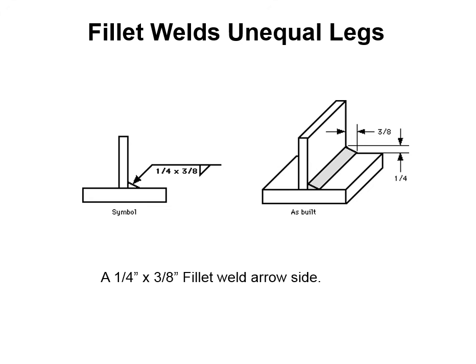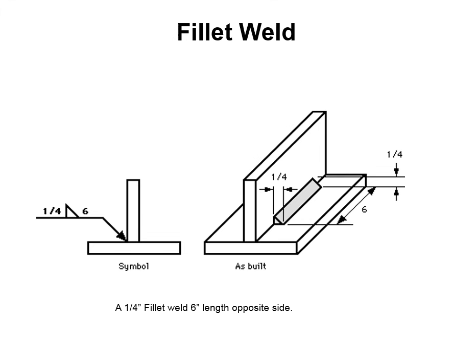Here we can see a fillet weld symbol with unequal leg lengths: a 3/8 by 1/4 inch fillet weld, where the horizontal leg is 3/8 of an inch and the vertical leg is 1/4 of an inch, on the arrow side. And here's a 1/4 inch fillet weld, 6 inches long. It doesn't designate a starting or stopping point, but the drawing gives you a start point and you make the 6-inch weld from there. The size goes to the left and the length goes to the right of the fillet weld symbol.